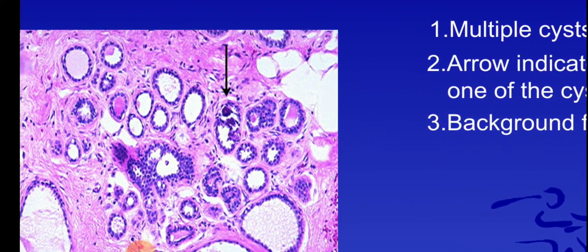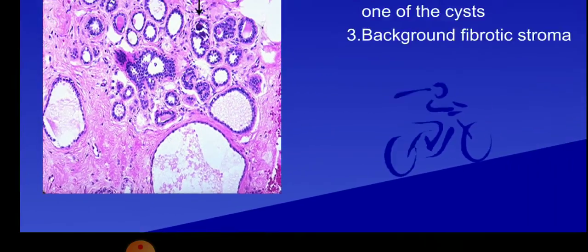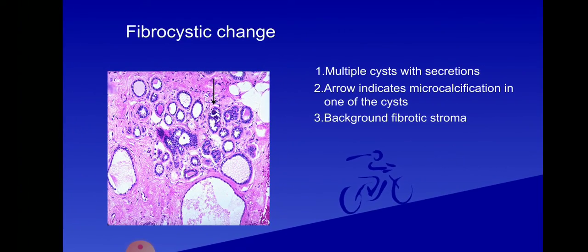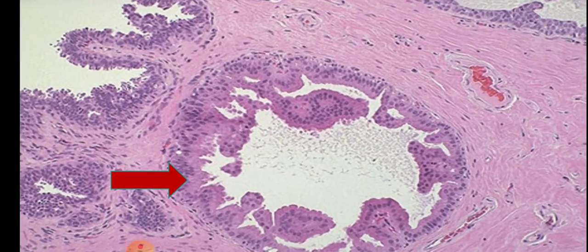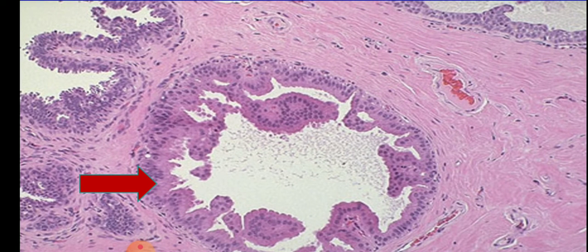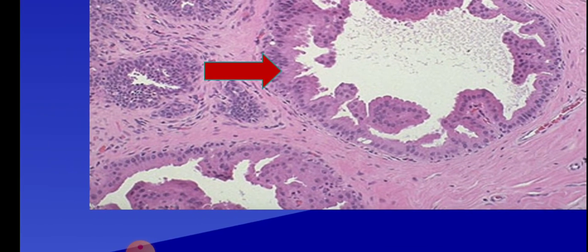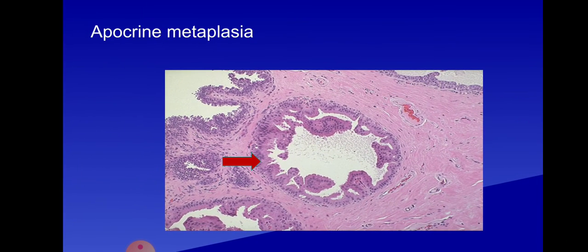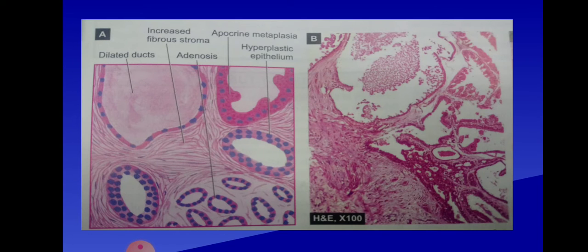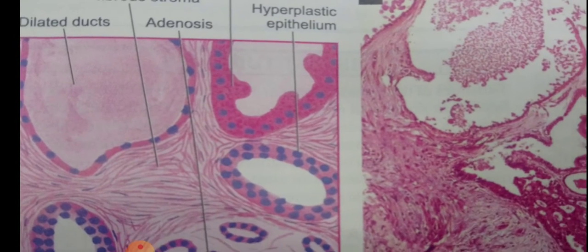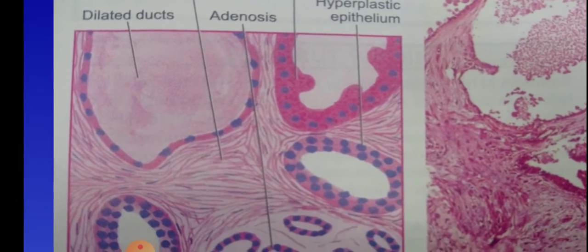In summary, the non-proliferative type includes cyst formation, calcification, and sometimes apocrine metaplasia — but never epithelial hyperplasia. Apocrine metaplasia shows cells with abundant pink cytoplasm and benign-appearing nuclei. The histopathology shows a dilated duct filled with secretions and surrounded by fibrous tissue.